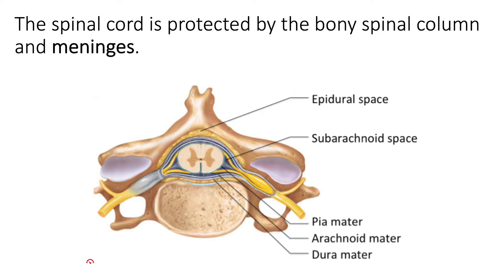The dura mater is a dense connective tissue that surrounds the entire spinal cord. Immediately deep to the dura mater is a layer called the arachnoid mater. The important part of the arachnoid mater is actually the space that lies below it, called the subarachnoid space.